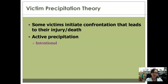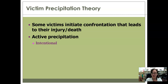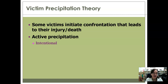Depending on situational factors, active precipitation can explain the beginning of the situation without necessarily justifying the offender's behavior — especially if someone is just being belligerent and then somebody really amps up the violence against them, or it results in death. It's not to excuse the offender so much as to recognize that victims can play a role. In active precipitation, there should absolutely be the victim playing some kind of intentional role in the beginning of the confrontation.